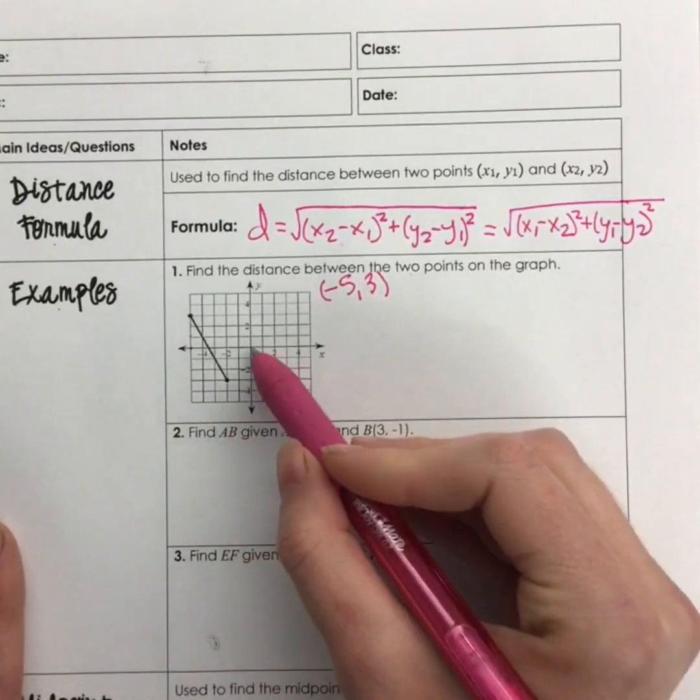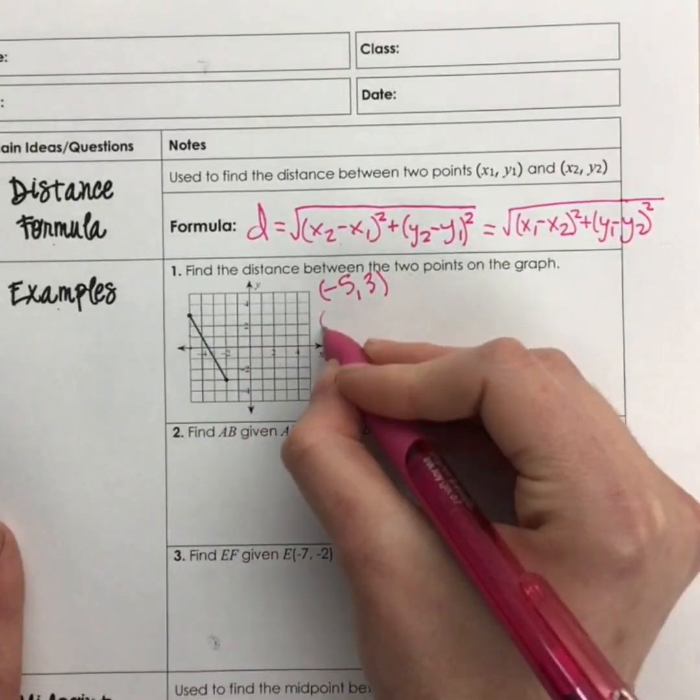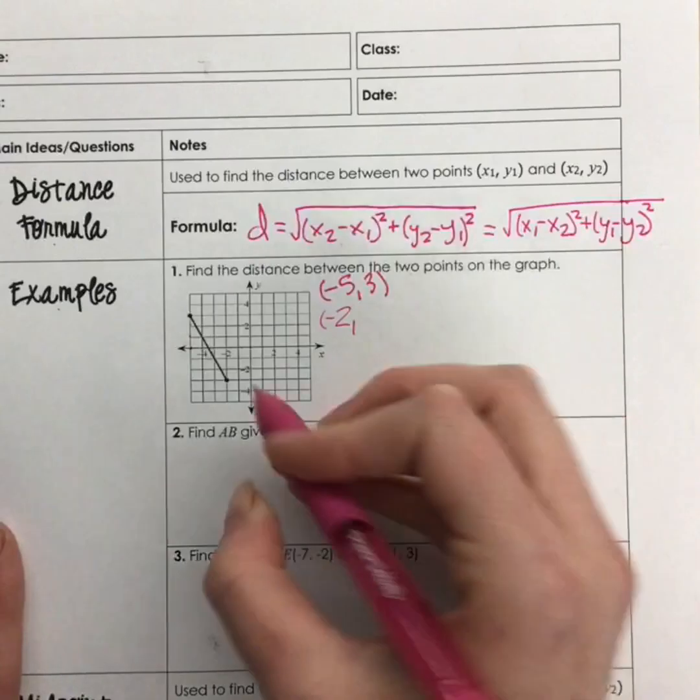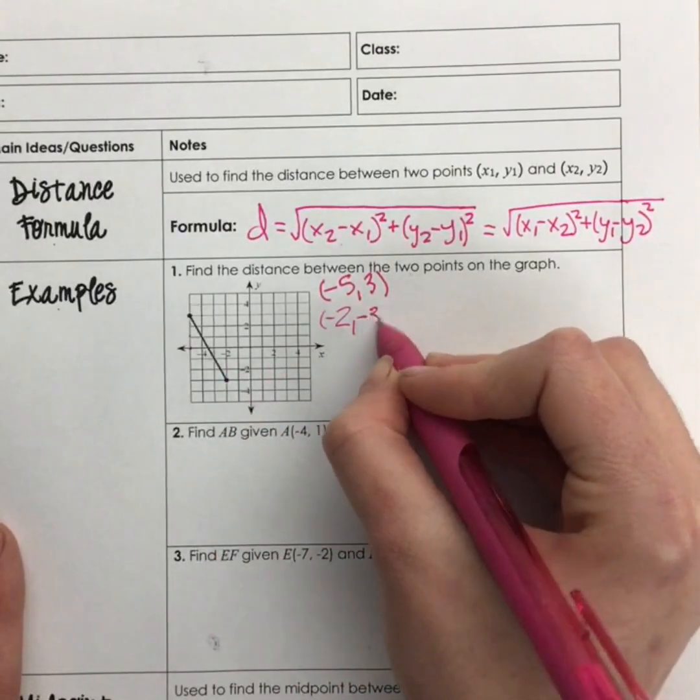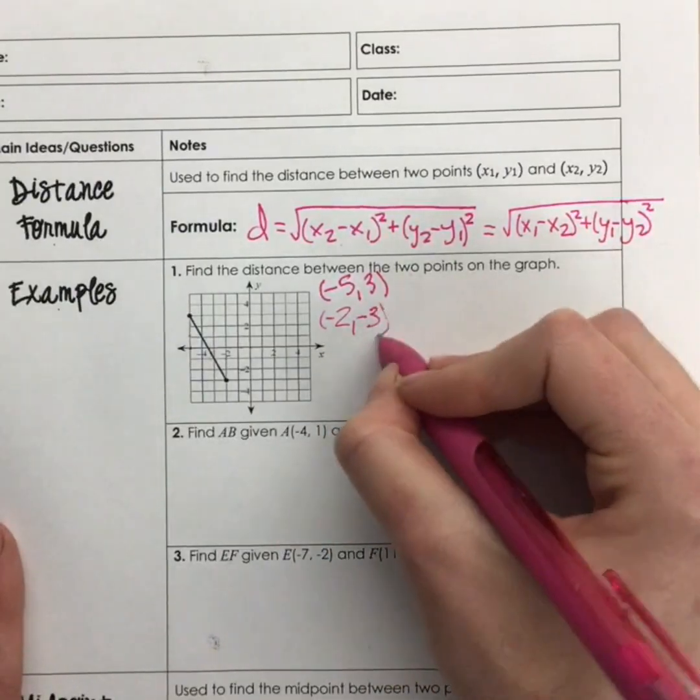And our second point, we only come over negative 2 on the x, and then we have down 1, 2, 3, so negative 2, negative 3 for this here point.